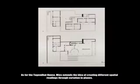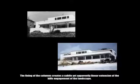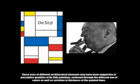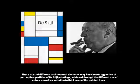As for the Tugendhat House, Mies extends the idea of creating different spatial readings through variation in planes. The lining of columns creates a subtle yet apparently linear extension of the hill's engagement of the landscape. This use of different architectural elements may have been suggestive of perceptive qualities of the steel paintings, achieved through different use of colours as well as variation in thickness of the painted lines.